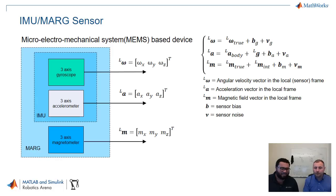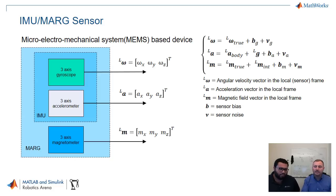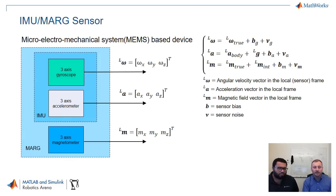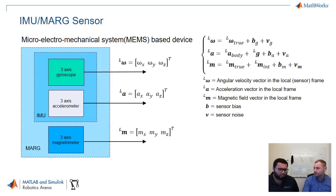One of the functionalities of the new Sensor Fusion and Tracking Toolbox is orientation estimation. You can actually get orientation estimation without writing any complex Kalman filters or other algorithms — just by calling a function. An IMU, which stands for inertial measurement unit, is a sensor composed of a three-axis gyroscope providing angular velocity measurements in XYZ, and a three-axis accelerometer for acceleration. If we also have a magnetometer — basically a three-axis compass — we usually refer to the combination as MARG, which stands for magnetic angular rate and gravity.